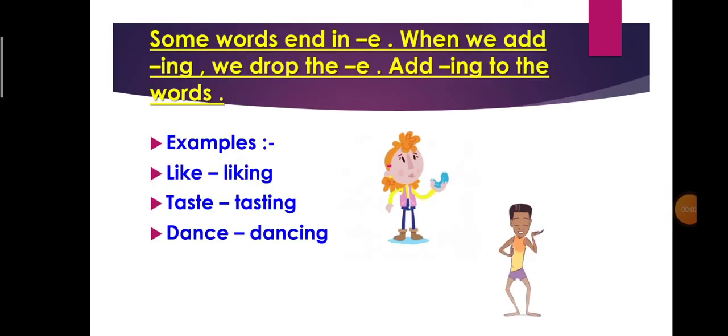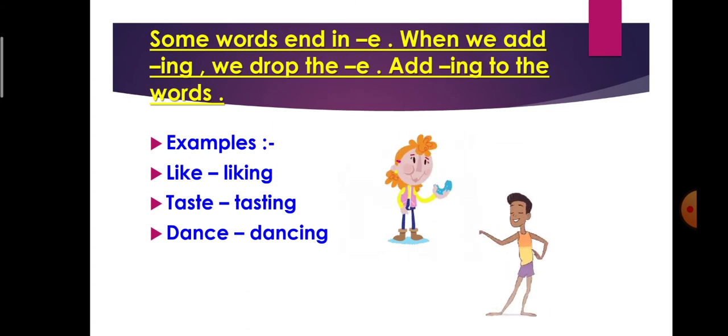Now, some rules. Some words end in 'e'. When we add -ing, we drop the 'e'. Add -ing to the words. It means any word which is having last letter 'e'. In that word, when we add -ing, that time we remove that 'e' and add -ing to the word. Iska matlab, koi bhi word, jiska last letter 'e' hota hai, us mein hum -ing add karte time, woh 'e' hata hai, aur -ing add karte hai. Example, like. In this word, l-i-k-e, last letter is 'e'. So, we will remove this 'e' and we will add -ing. And it will become liking. L-i-k-i-n-g.